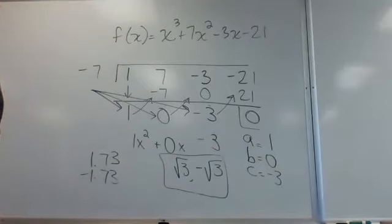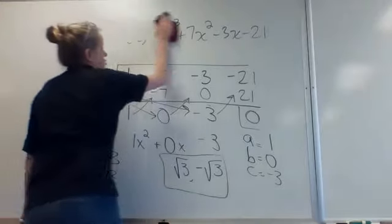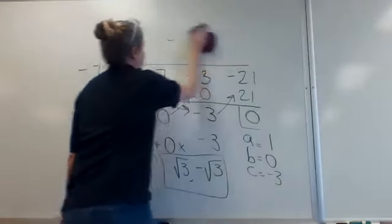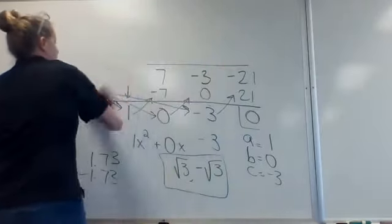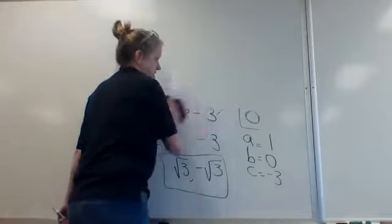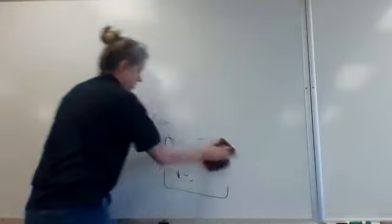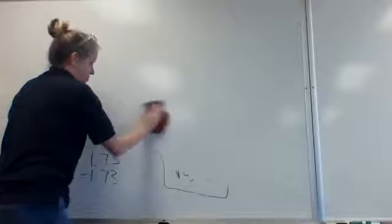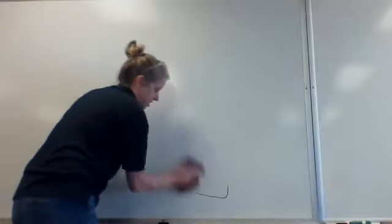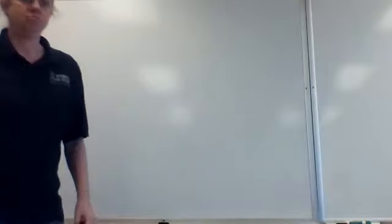So the other two zeros are square root of 3 and negative square root of 3. Best case scenario is when you put it in Y equals and you can see it — that's what I always try first. If you can't see where they crossed, then you use another method, which is synthetic division or factoring different ways.